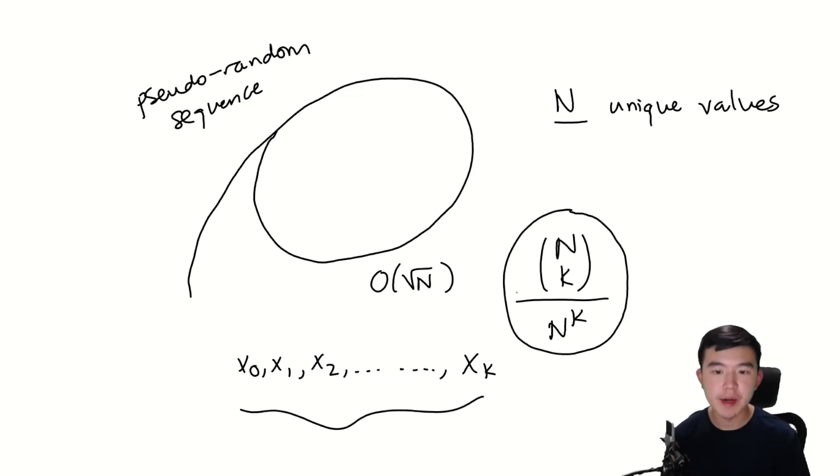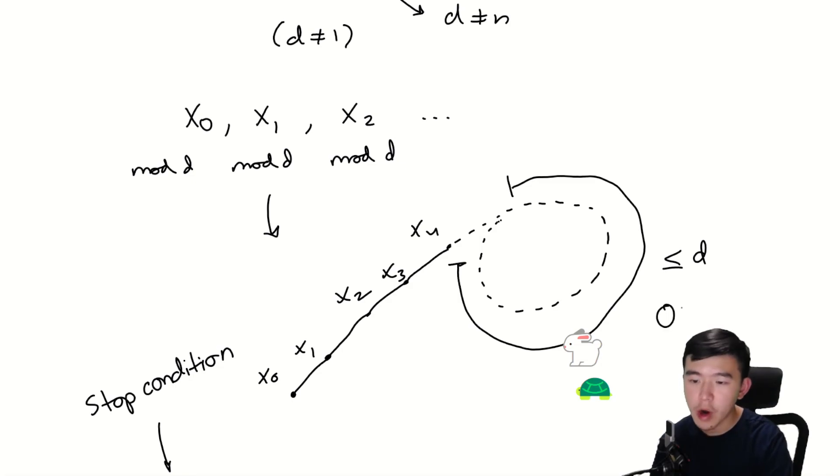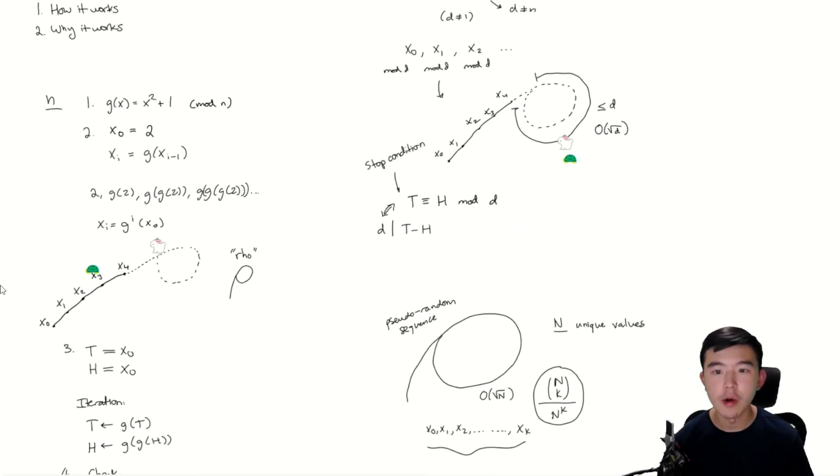Now what this means is that the original sequence mod d is going to cycle on average before O(√d) steps, while the original sequence is going to cycle before O(√n) steps.